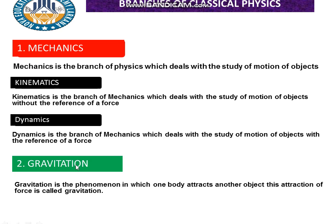The next branch of classical physics is gravitation. This idea was started by Sir Isaac Newton when he was sitting under a tree. Suddenly an apple dropped on the ground. He observed why the apple dropped downward and not upward. He concluded that there is a force, a gravitation, which keeps objects attracting one another. Gravitation is a phenomenon in which one body attracts another object. This attraction of force is called gravitation.